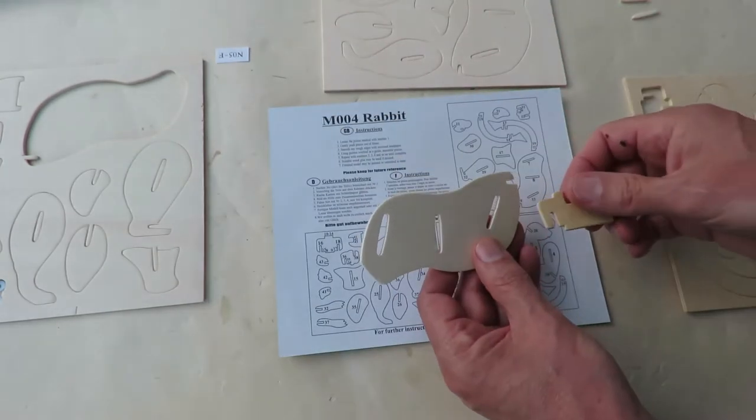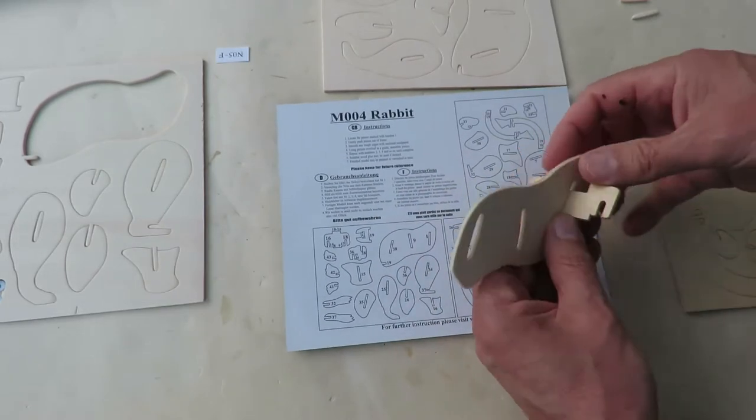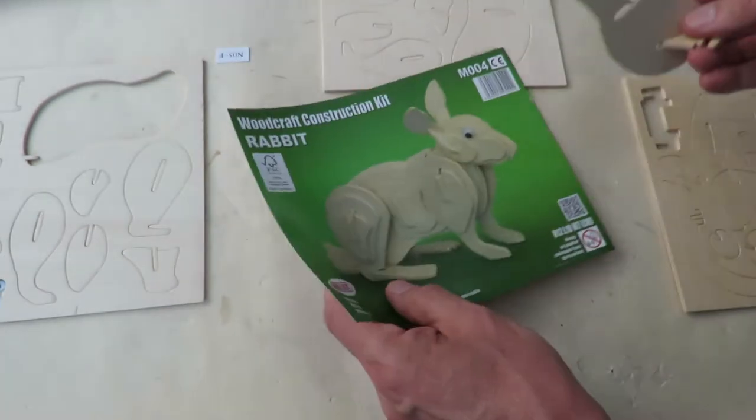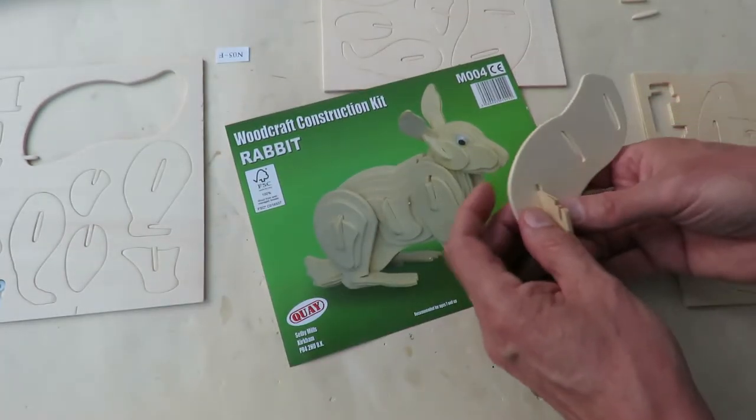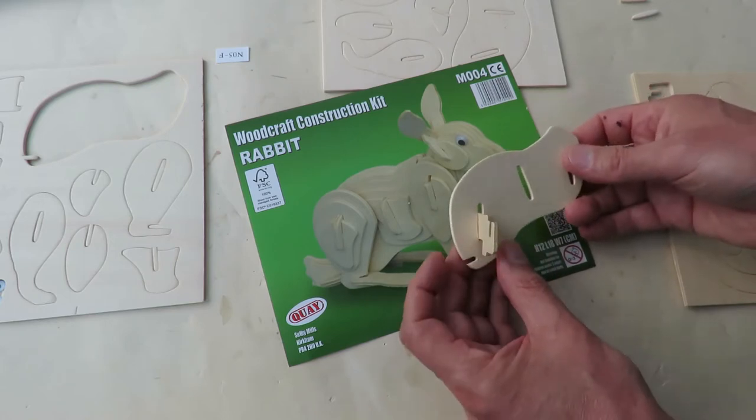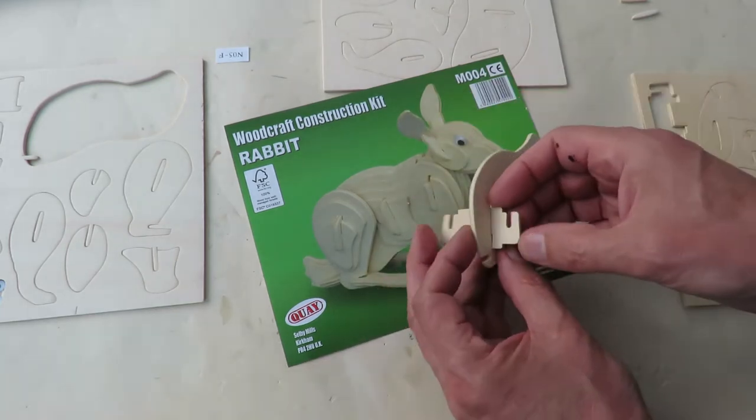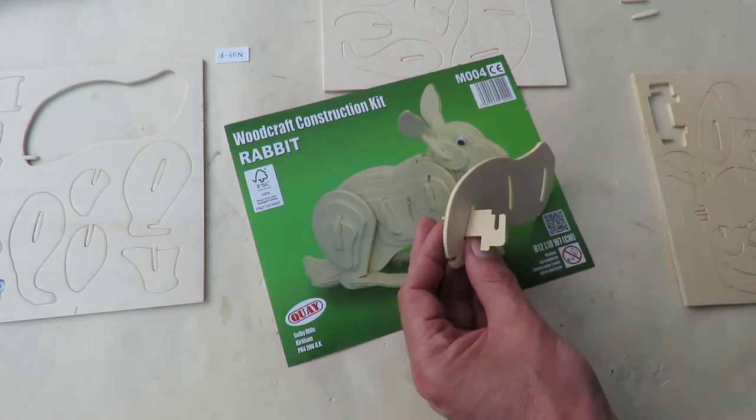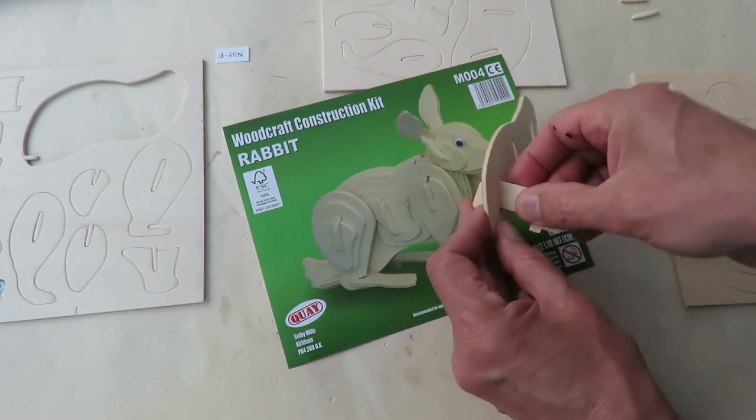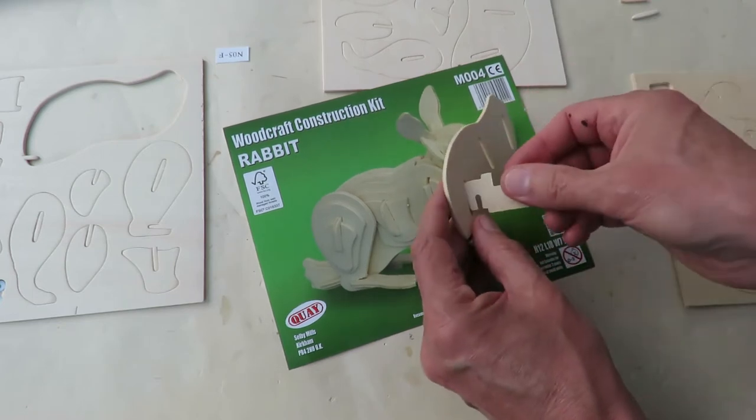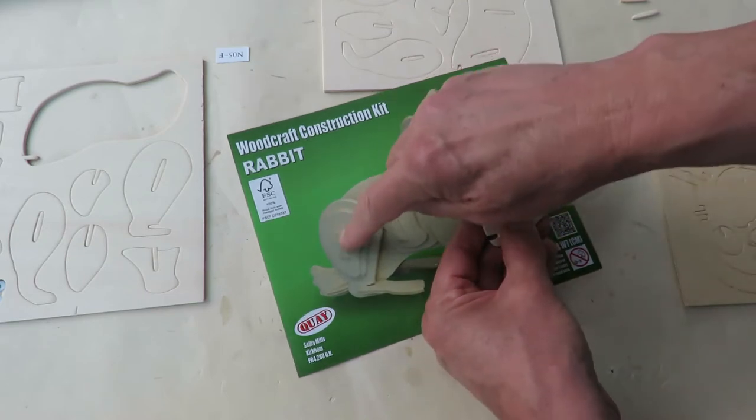The question is always which way round is up and which way is down. Depends whether that's the... Yeah, that's going to be the head end and that's the tail end.